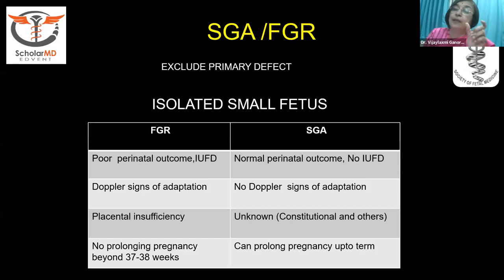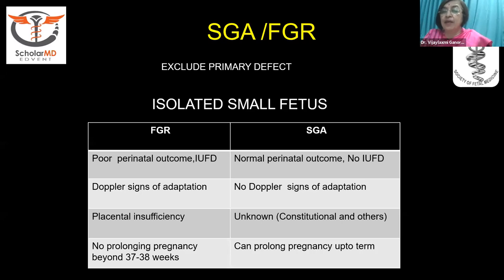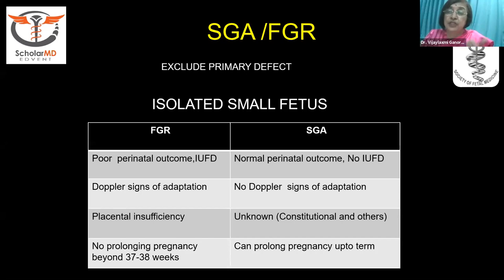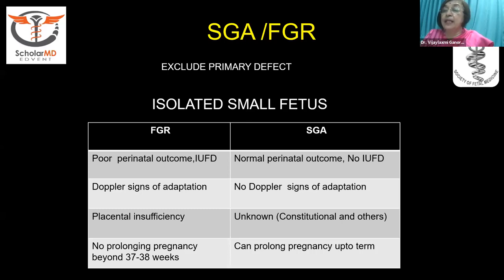A constitutionally small baby is basically a statistical deviation — they have good perinatal outcome, normal Dopplers, and often deliver uneventfully at term. But an FGR baby must be picked up earlier, because as Dr. Aher said, they have a very poor perinatal outcome, with unexplained stillbirths, multiple Doppler adaptations from umbilical artery to middle cerebral artery, and almost always some placental insufficiency. Depending on the severity and staging, we decide when and how frequently to monitor to give a good outcome.